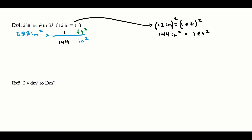I plug that relationship in: 1 foot squared on top, 144 inches squared on bottom. I take 288 and divide by 144, getting 2 feet squared. Checking sig figs: 288 has three sig figs, but 2 only has one sig fig — I need to add sig figs here. Writing it as 2.00 gives three significant figures. My units are feet squared. That's my answer: 2.00 feet squared.